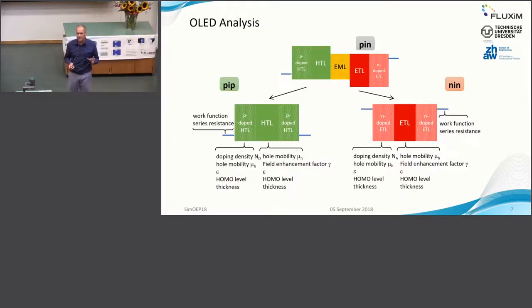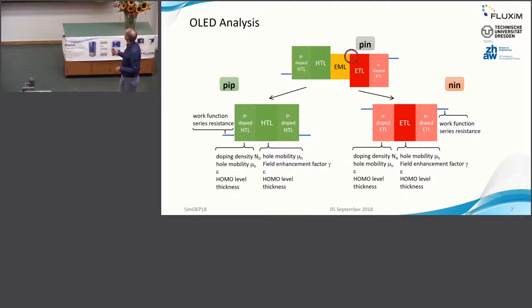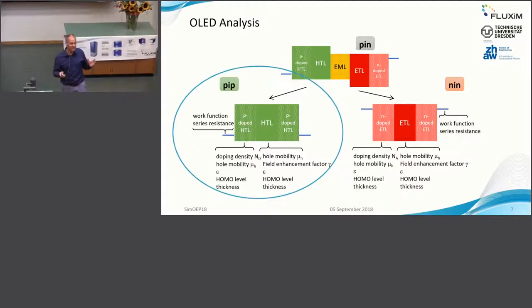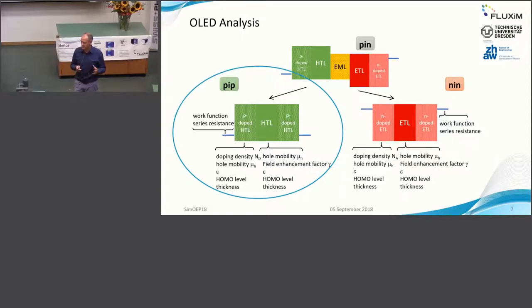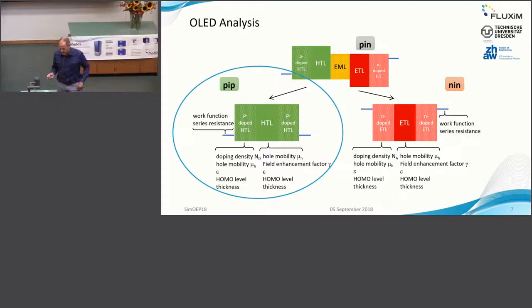Now let's move on to the OLED device studied in the European project. It is a five-layer OLED with an emission layer in the middle — all small-molecule devices evaporated in Dresden. We use a divide-and-conquer approach, focusing first on the PIP device. Even by simplifying and isolating some layers to make a hole-only device, getting a global fit for JV and impedance data is already a challenge. But we succeeded, as you will see. We also studied the NIN device, though that is out of scope today.